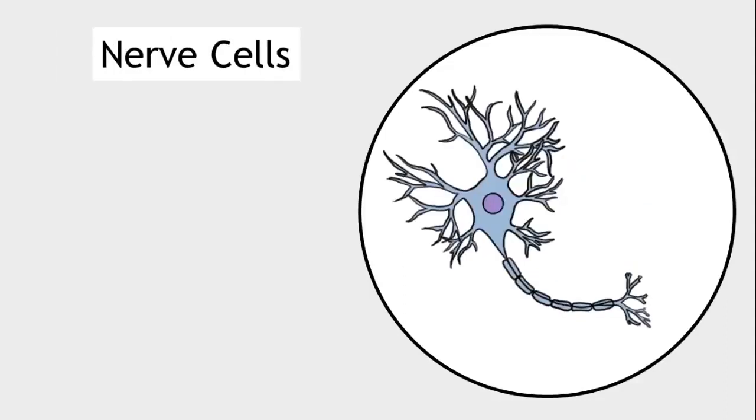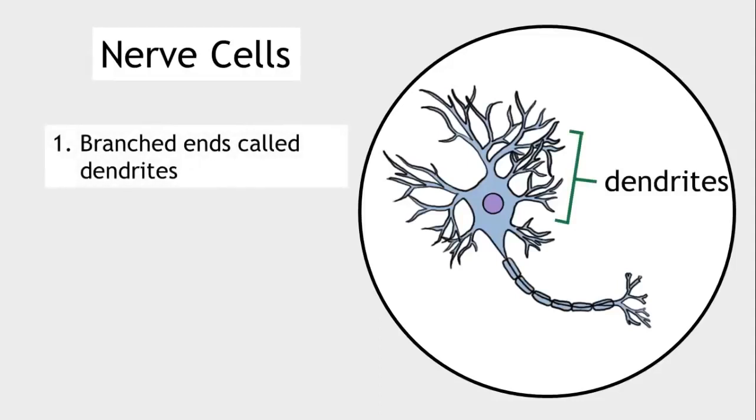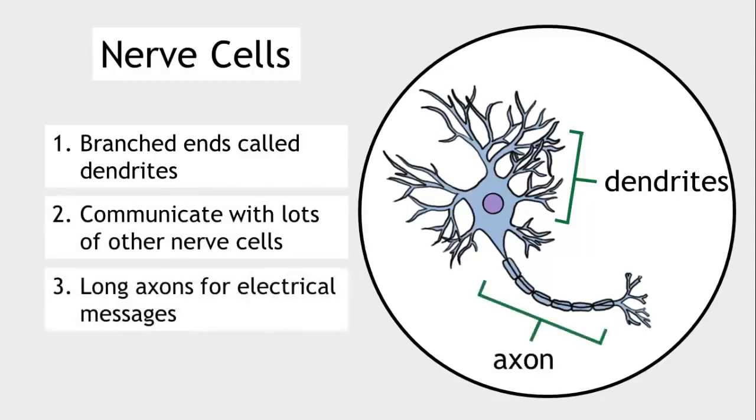Nerve cells are specialised in that they have branched endings called dendrites. This is so they can communicate with lots of other nerve cells. You will also notice they have long axons along which the electrical message can travel.